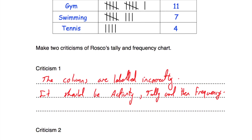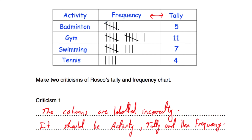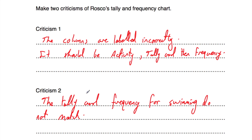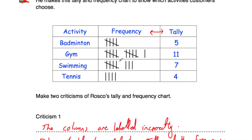Criticism two. Looking at the data: badminton has five tallies and five in frequency — correct. Gym: 11 tallies and 11 — correct. Swimming: there are eight tally marks but the frequency column shows seven. Those numbers don't match. Tennis is four and four — correct. But for swimming, the tally and the frequency don't match — we've got eight tallies and seven in the frequency column, and that shouldn't be the case.